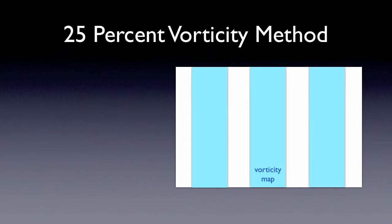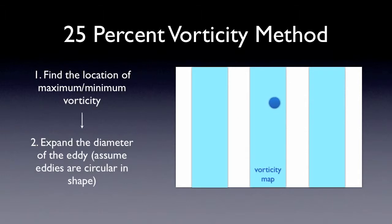Here is a demonstration of the 25% vorticity method. The first step is to find the vortex core, where the peak vorticity is located. And then, expand the eddy size until the vorticity on the edge drops to 25% of the peak vorticity. So this is how the 25% vorticity method works.